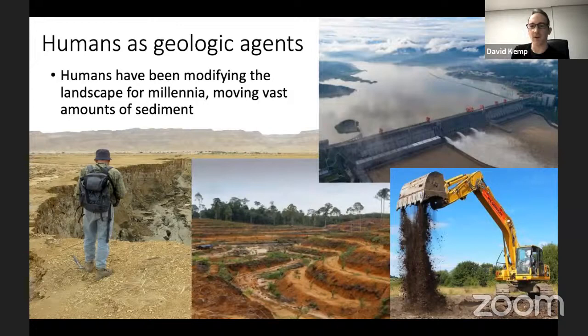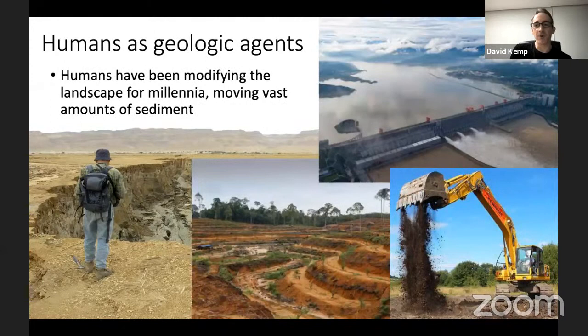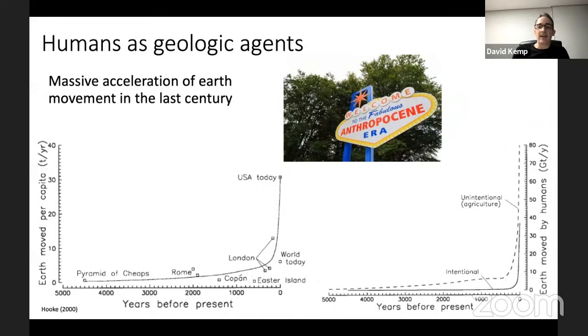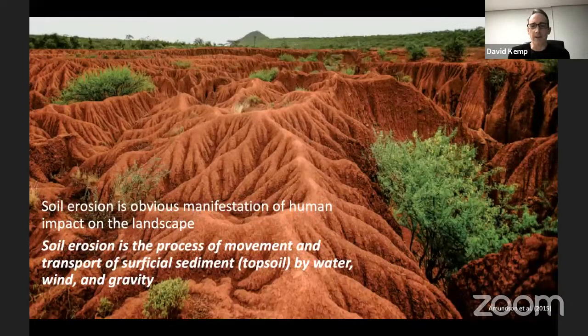Getting straight into it, it's been agreed and known for a very long time that humans are geologic agents — we are major drivers of landscape change on the Earth's surface, perhaps the major driver. We've been modifying the landscape for many years, basically moving vast quantities of sediment. Early work on this topic by Hooke, about 20 years ago, essentially quantified the amount of Earth that humans have moved. What he recognised was that humans have had an impact on the landscape for many centuries, but it's really only in the last century or two that the movement of Earth has really accelerated, largely going hand in hand with economic development and population growth. This is one of the defining features of the Anthropocene.